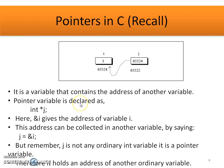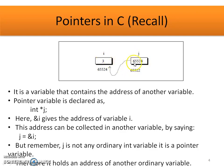How to declare a Pointer type variable? Declaration is with the help of the asterisk symbol: integer star j, also called Pointer j. How to assign an address of a variable to Pointer type variable j? It is assigned with the help of the ampersand symbol. Address of i is assigned using the assignment operator to the variable j. We need to remember that j is not any ordinary integer type variable but a Pointer type variable, so it holds an address of another ordinary variable. As j is holding the address of i, that is 65524, we can say that j is pointing to i.